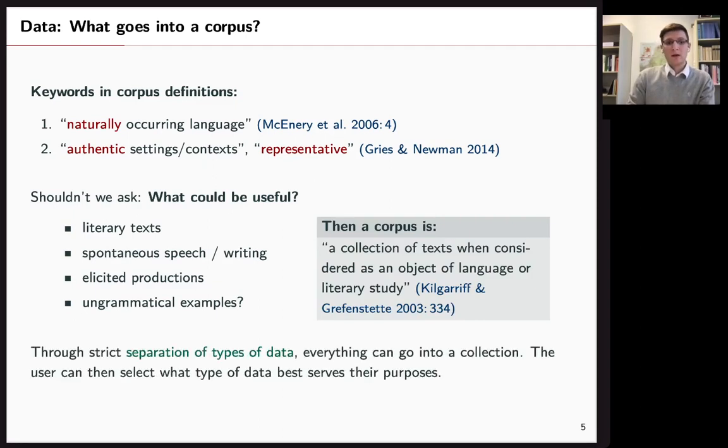So basically a corpus could contain anything that could be an object of language or literary study. However, we need to make sure that these different types of data can be separated because you don't want to mix ungrammatical with grammatical examples of course. But in the end it should be the user that has to decide what he's looking for. Does he want to include ungrammatical or elicited instances? Or does he want to focus on only spontaneous speech and so on?